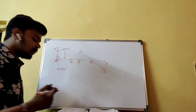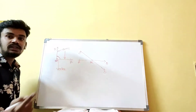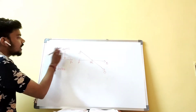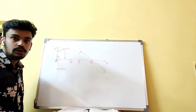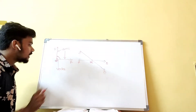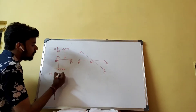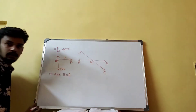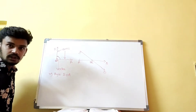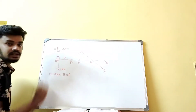Now, how do we name an angle? Always remember that you have to include both arms and the vertex, and the vertex must go in the middle. So the angle formed by arms OA and OB with vertex O is named angle BOA. The vertex O is placed in the center of the two arms B and A. So this is the angle formed, which we write as angle BOA.